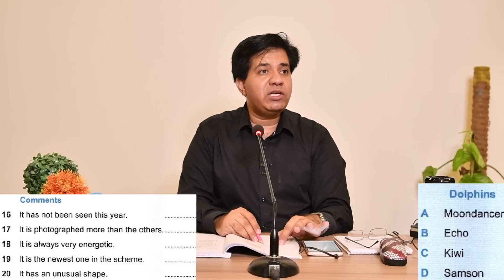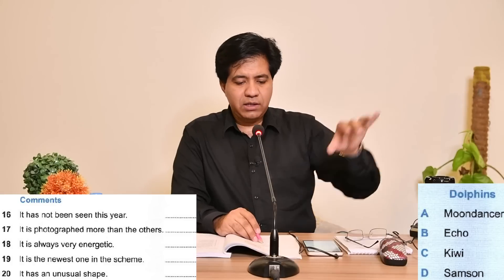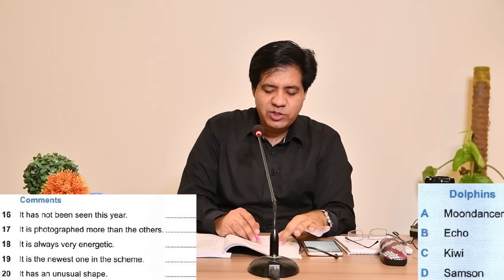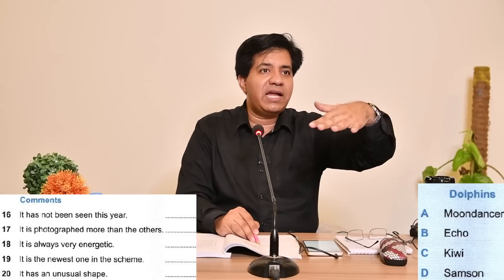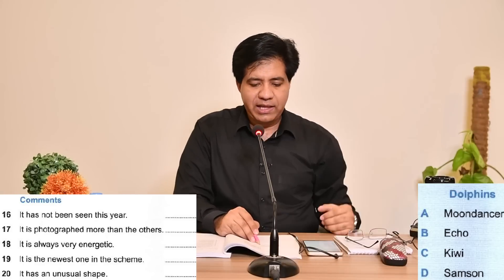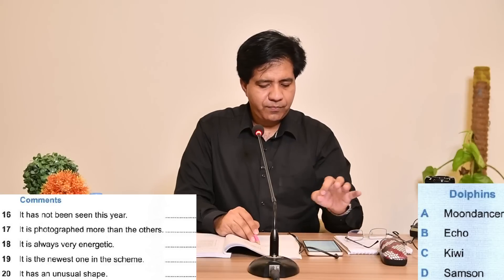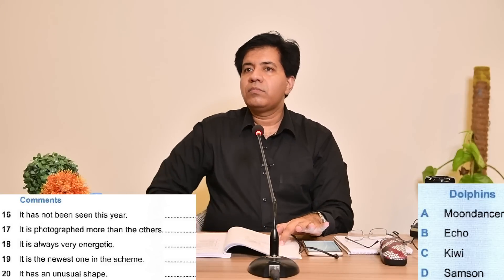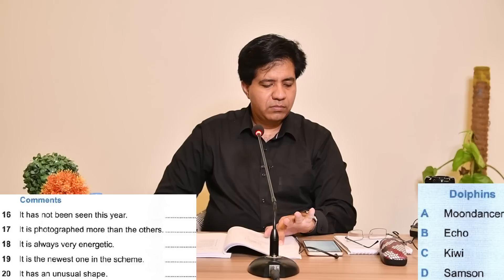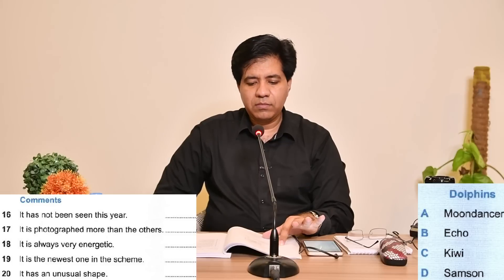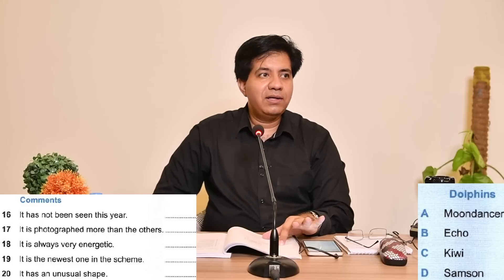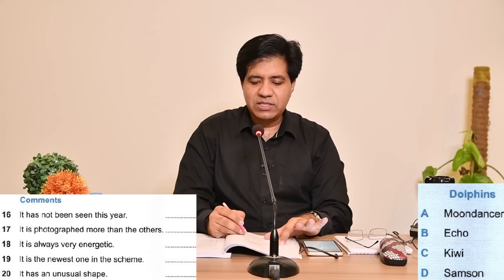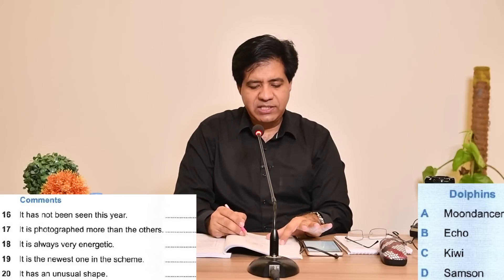Question number 19: the newest one in the scheme. Newest means just joined, recently joined, just became part of it. You'd probably expect him to be the youngest — he's not, that's Kiwi — but Samson is the latest of our dolphins to be chosen for the scheme. Samson is the latest one, so D is the right answer.